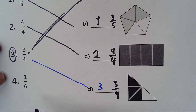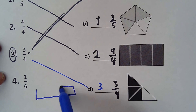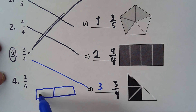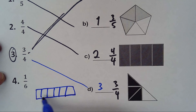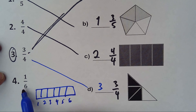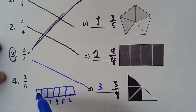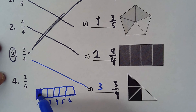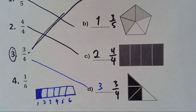For one over six, you create your own figure. The easiest way is to draw a rectangle and divide it into six pieces — three here and three here — giving six pieces total. Then shade one, and that is your representation of one over six.